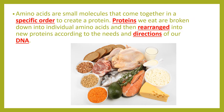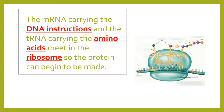Proteins we eat, like chicken or beans, are broken down into individual amino acids and then rearranged into new proteins according to the directions of our DNA. There are only 20 amino acids, so we need to figure out how to rearrange them to get a specific protein. The mRNA carrying the DNA instructions and the tRNA carrying the amino acids meet in the ribosome so the protein can begin to be made. The tRNAs look like the letter T, with amino acids at the top and mRNA at the bottom, surrounded by the ribosome.